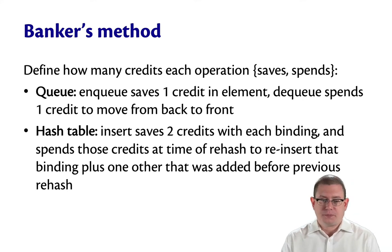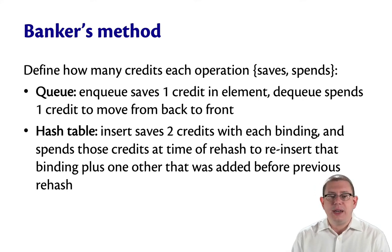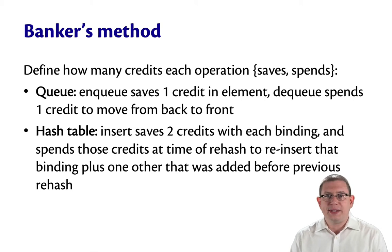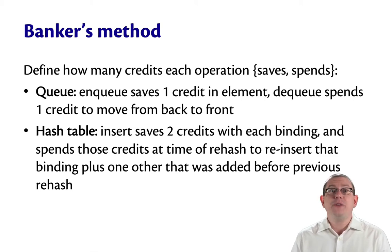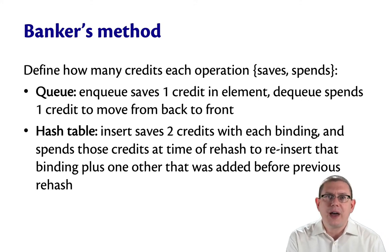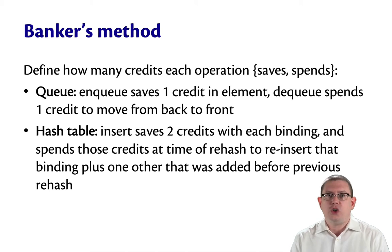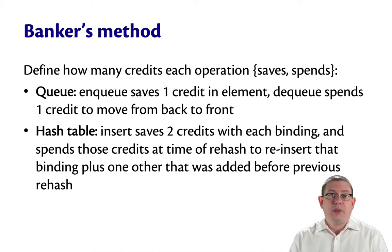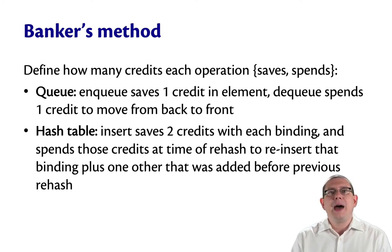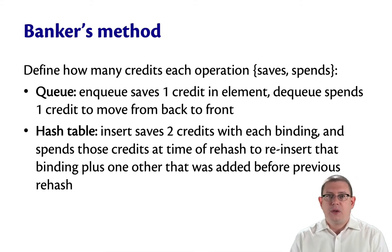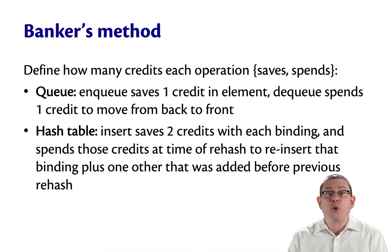As for a hash table, let's say that an insert saves two credits at each binding. Metaphorically speaking, that binding has a bank account balance along with it. At the time of an insertion, two credits go into that binding. Later on, someday, that binding might need to be rehashed and reinserted. At that time, we spend those two credits, and we do it in a clever way. We spend one of the credits to rehash and reinsert that binding.